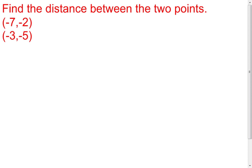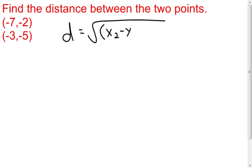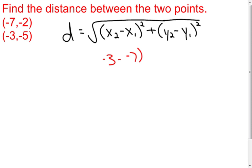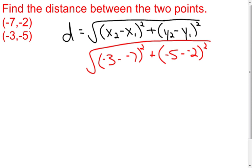I want you to think back to the distance formula. We have to subtract our x values and square them. We also have to subtract our y values and square them. Add that all together and then take the square root of everything. Don't forget the square root — I've watched many students forget to put that on and end up with the wrong answer.